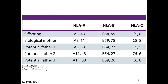We can basically figure out which HLA alleles the offspring got from the mother, because we can see which ones the mother and child share. For example, the mother and child both have A3, so the mother must have given the baby A3. We go through and find which A, which B, which C came from mom - the leftover ones must have come from the dad. Then we look to see which of the potential fathers has those leftover alleles - A43, B54, C5 - and we find it's father number two.